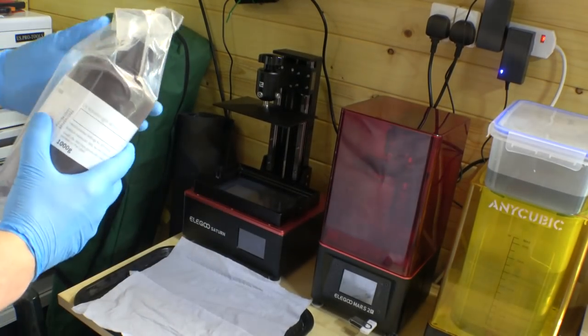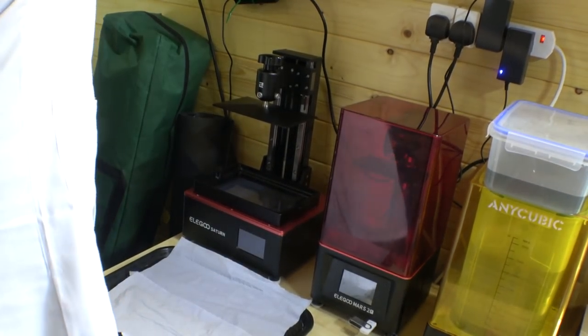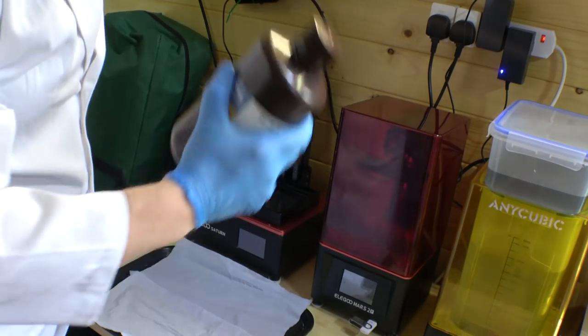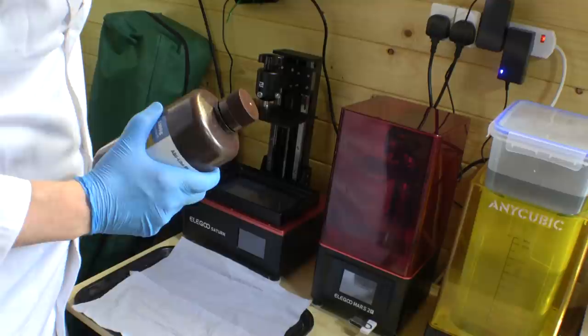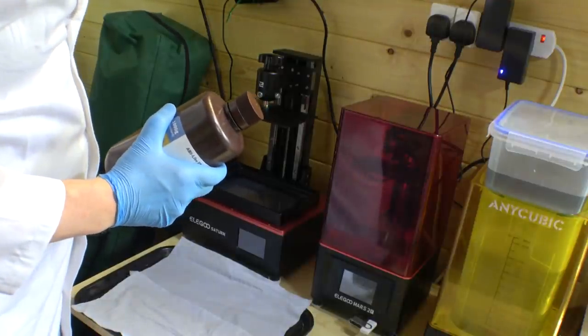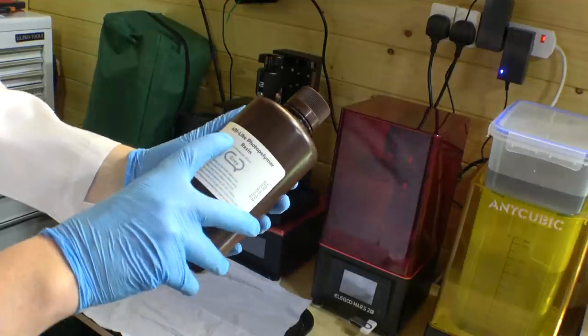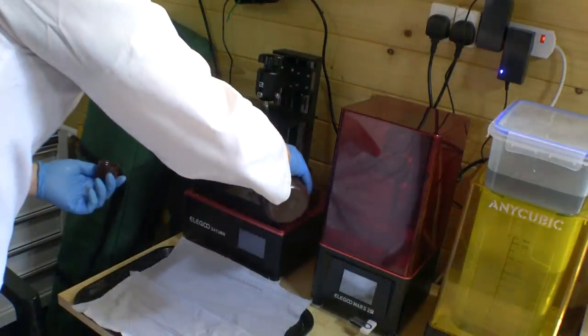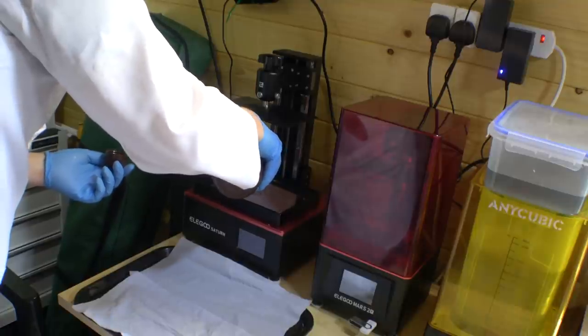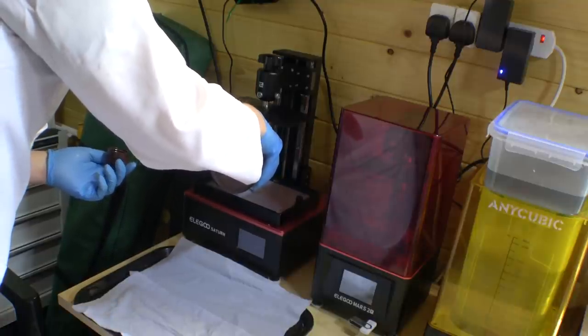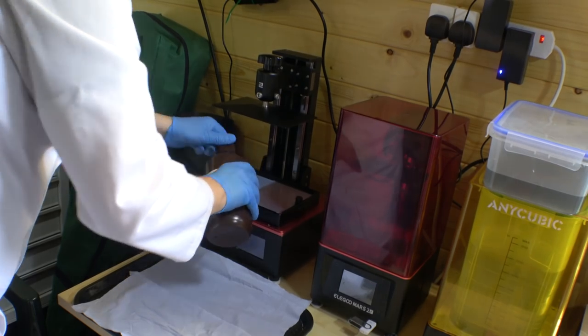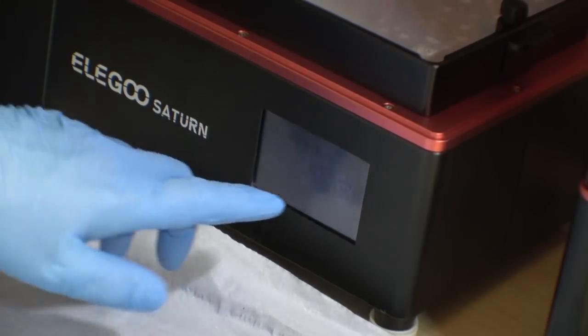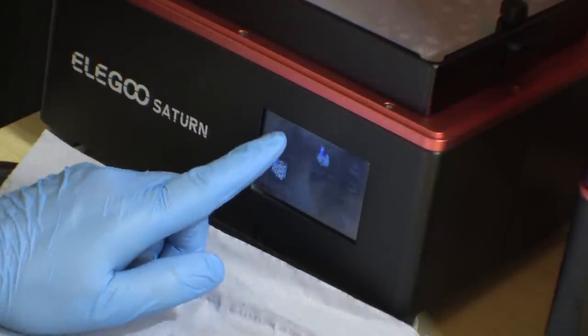I'm going to print this in grey. I need to use up this grey, I've had it for quite a while. It's generally only good for about a year, so I want to get it used up while it's still fresh. I'm using ABS-like photopolymer resin. Let's just fill up the vat with the grey, up to the max line.